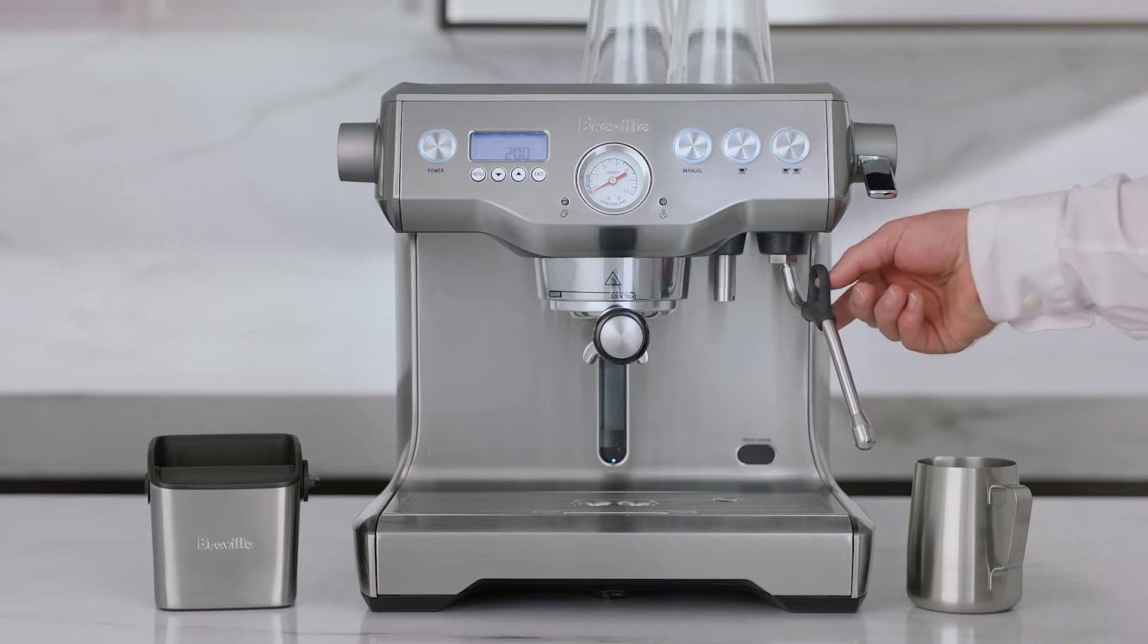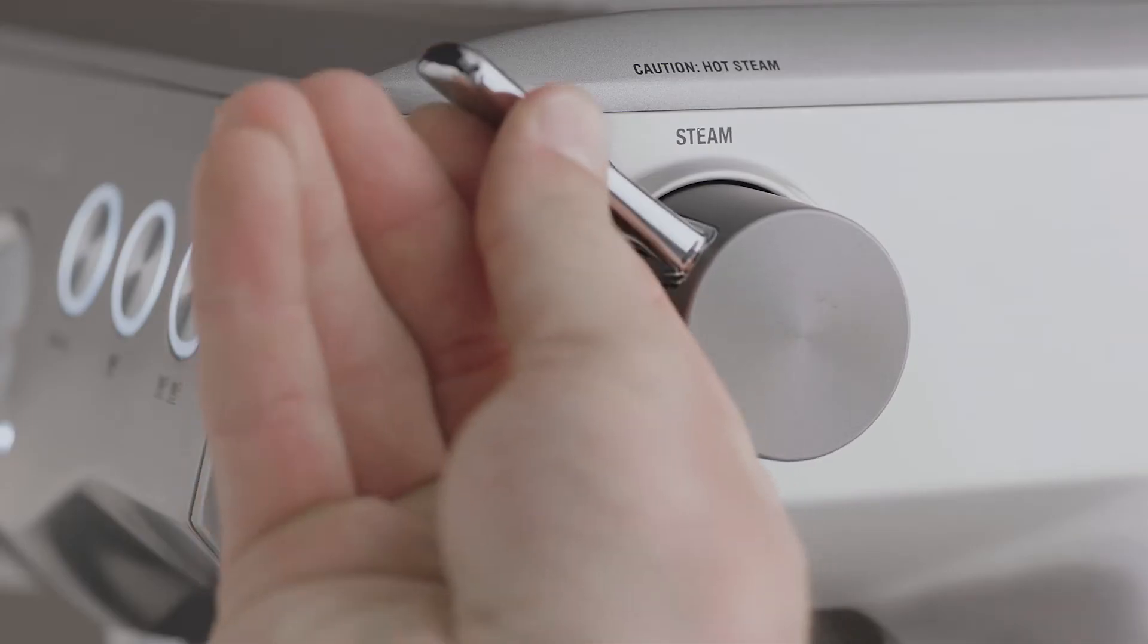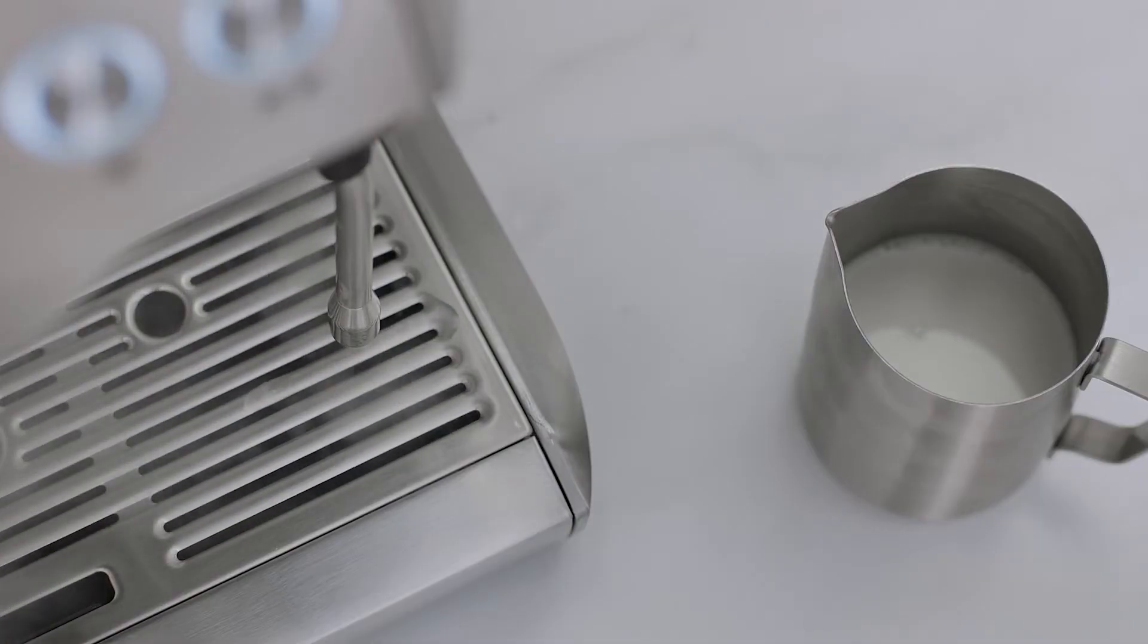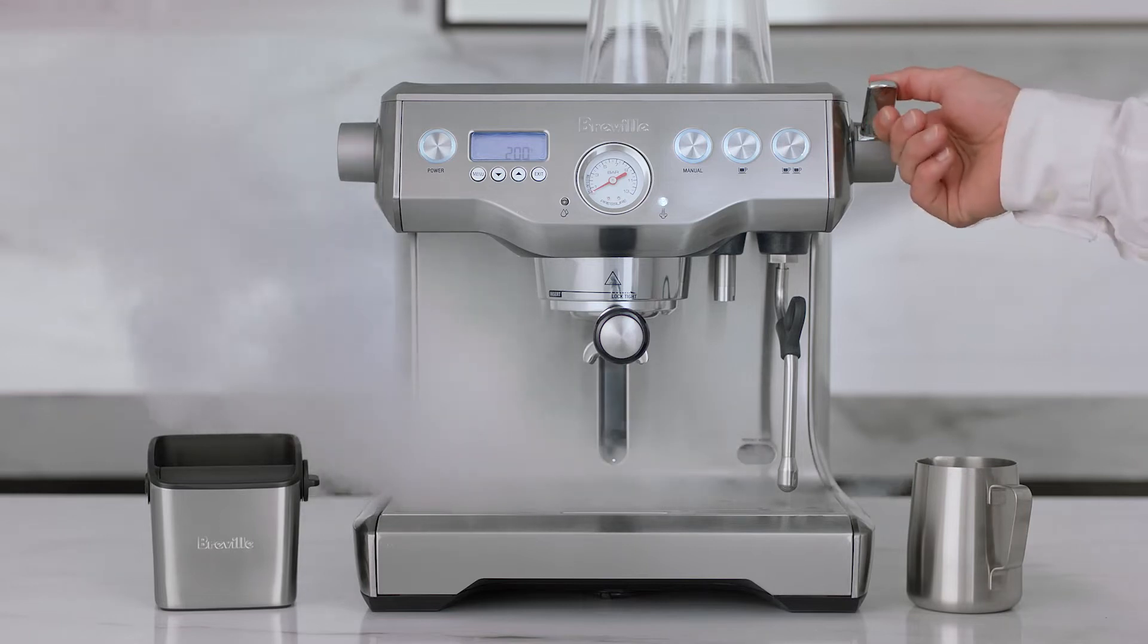Position the steam tip over the tray and lift the steam lever or turn the steam dial. Allow steam pressure to build to maximum level, priming the system and purging any condensed water from the system.